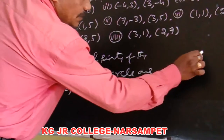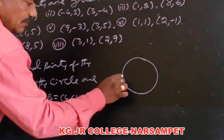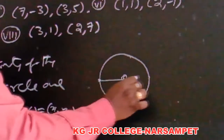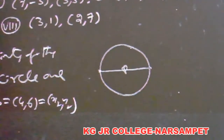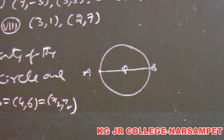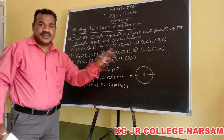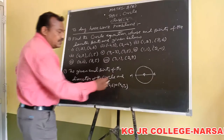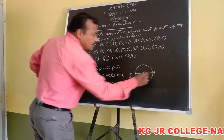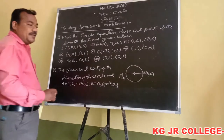Now students, observe this rough diagram. This is the circle equation — it is a given chart. This is the diameter. The diameter passes through the center of the circle. It is a chord; if a chord passes through the center of the circle it is called the diameter. Given that point A is (1,2) and point B is (4,6) — these are the endpoints of the diameter of the circle.